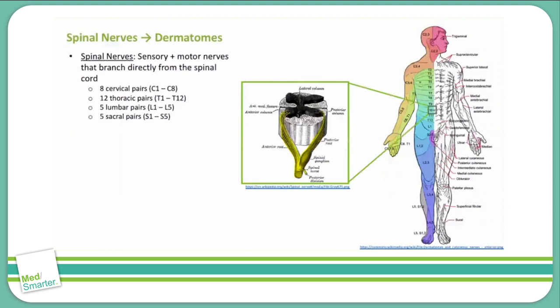The motor signal, or efferent signal, is carried on the anterior root, which exits from the anterior horn of the spinal cord. The sensory signal, or afferent signal, is carried on the posterior root of the spinal nerve and carries sensory information into the posterior horn of the spinal cord, so it can be carried to the brain. The posterior root is what's going to be important in the discussion of dermatomes, because dermatomes are part of the way the body organizes sensory signals.